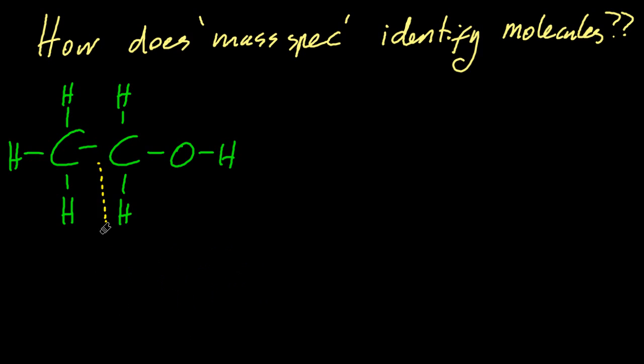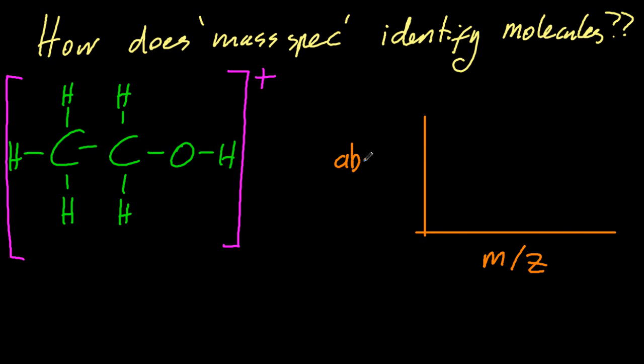All right then. So ethanol is shot with an electron gun, knocks off an electron to make positive ethanol. Okay, now it can go through the mass spectrometer. It can be accelerated and deflected. A mass spectrum, which is the readout, is abundance and M over Z, where Z is the charge, normally, invariably, plus one.